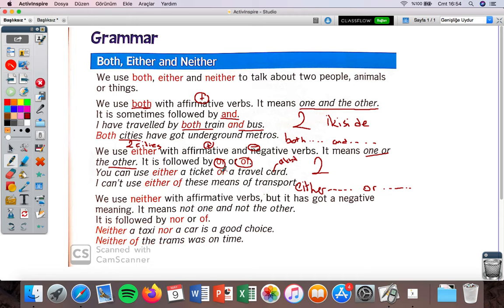Let's look at the examples. You can use either a ticket or a travel card. Travel card is like akbil. So again, you have two options: ticket or travel card. You can use one of them, either of them. Negative sentence: I can't use either of these means of transport. We are talking about two means of transport and I can't use either of them.